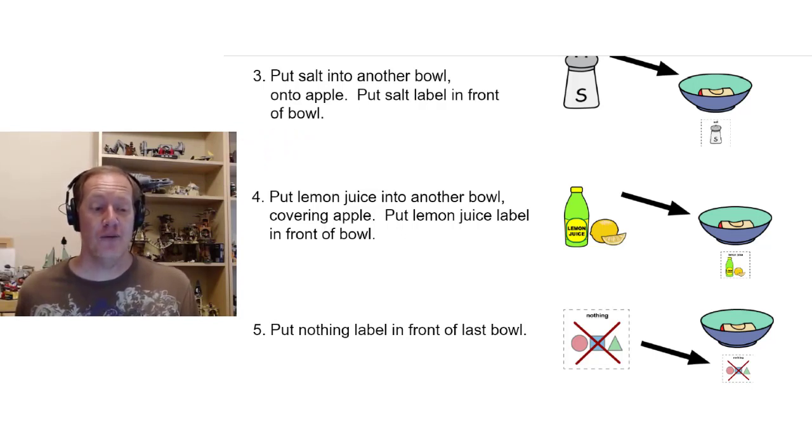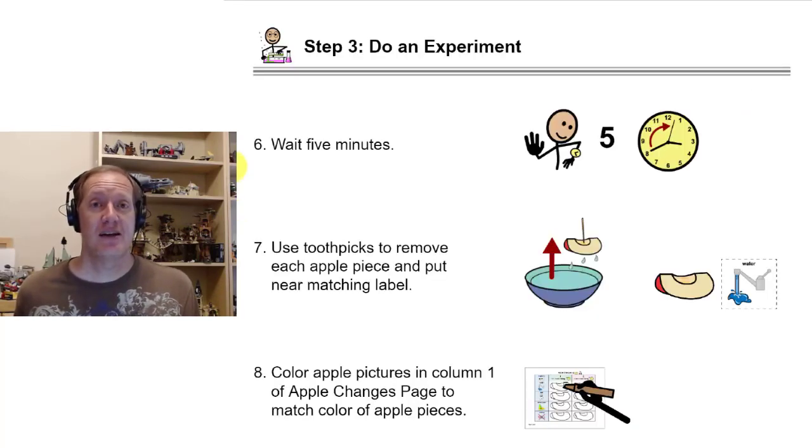Step four, put lemon juice into another bowl covering the apple. Put lemon juice label in front of the bowl. Step five, put the nothing label in front of the last bowl.